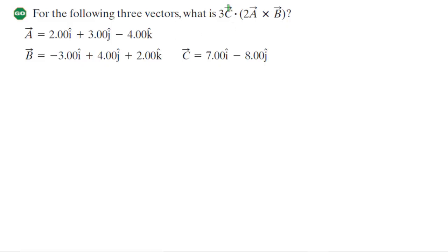In order to successfully evaluate this dot and cross product, what might be useful to do first is figure out what 3 multiplied by vector C equals, and then also 2 multiplied by vector A. So we're going to take care of those two quantities first.